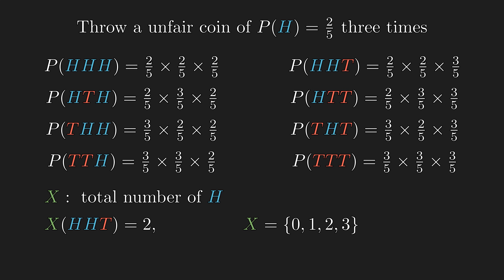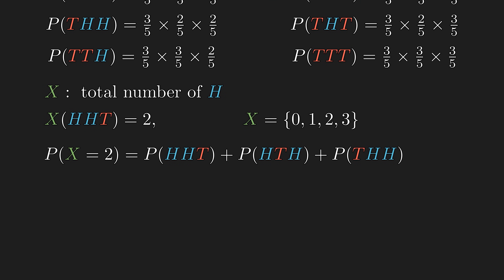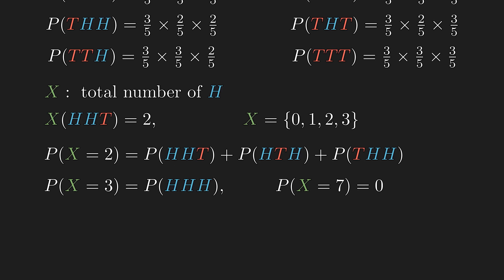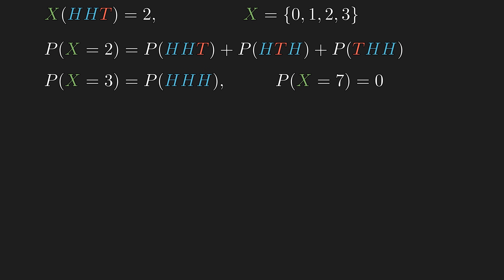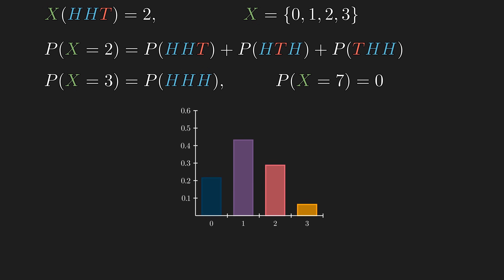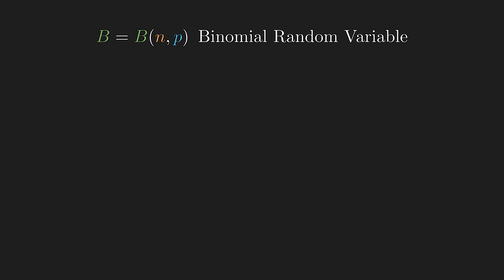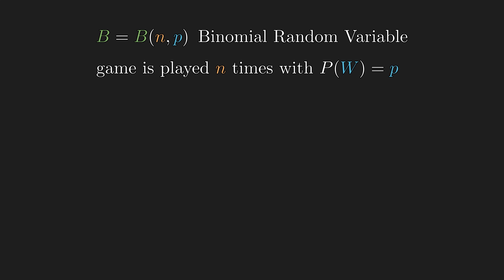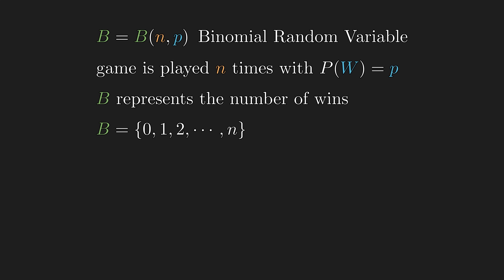We can calculate P(X = 2) by summing probabilities of all events with 2 heads. P(X = 7) = 0 since 7 heads in 3 tosses is impossible. Plotting probability for each value gives the probability mass function (PMF). This is an instance of a binomial random variable, denoted B(n, p): n trials, p probability of winning one trial. B can take values from 0 to n. To find P(B = k) for 4 trials at p = 1/3, there are C(4,2) = 6 ways to win twice, each with probability (1/3)²(2/3)².